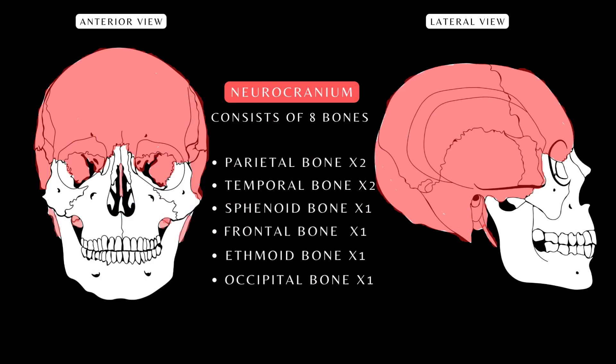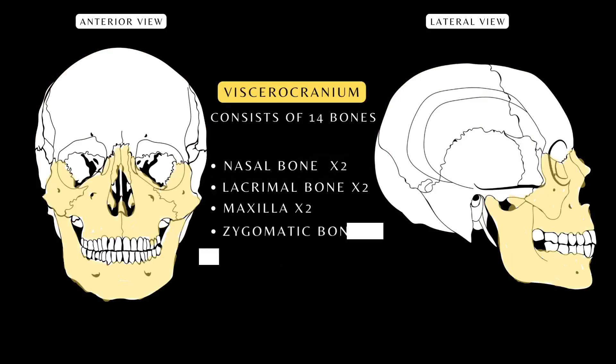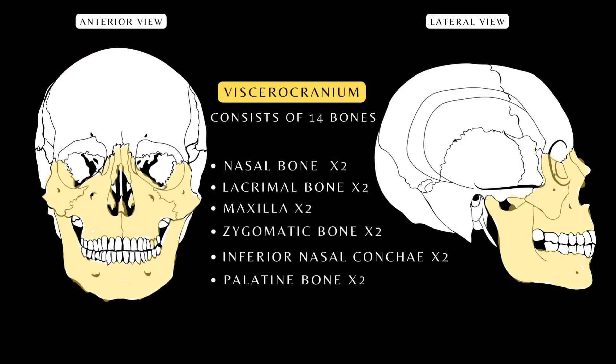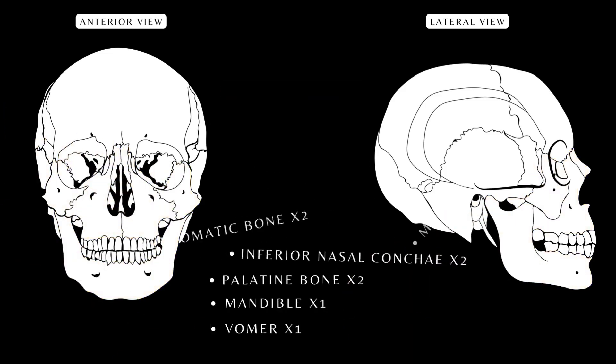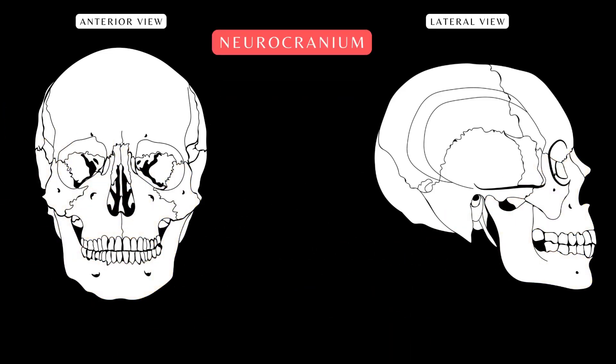The other group of bones of the skull forms the viscerocranium, or the facial skeleton. They comprise 14 bones: 6 paired bones which include the nasal bone, the lacrimal bone, maxilla, zygomatic bone, inferior nasal concha, and palatine bone, as well as the unpaired mandible and vomer. Let's look at the bones that make up the neurocranium.